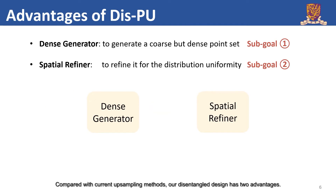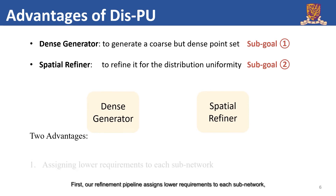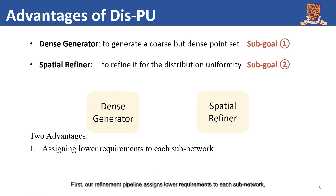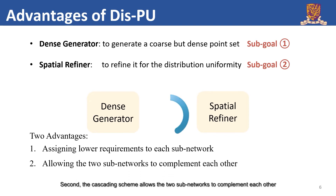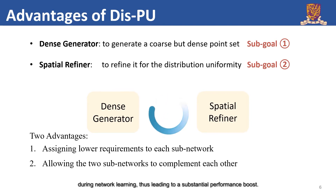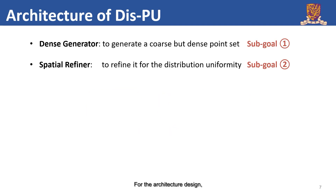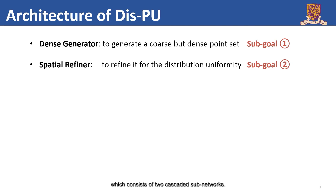Compared with current upsampling methods, our disentangled design has two advantages. First, our refinement pipeline assigns lower requirements to each sub-network, making them more focused on their own sub-goals. Second, the cascading scheme allows the two sub-networks to complement each other during network learning, thus leading to a substantial performance boost. For the architecture design, we formulate an end-to-end disentangled refinement framework, which consists of two cascaded sub-networks.